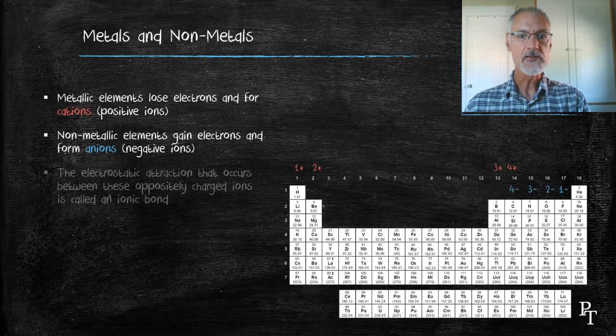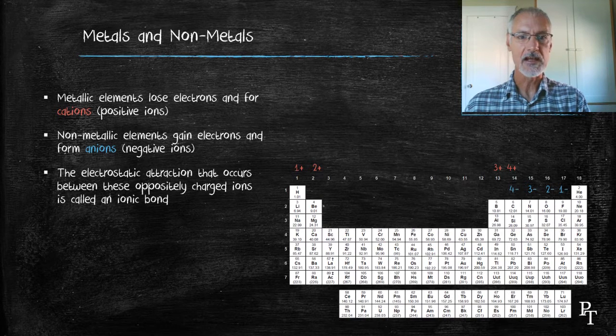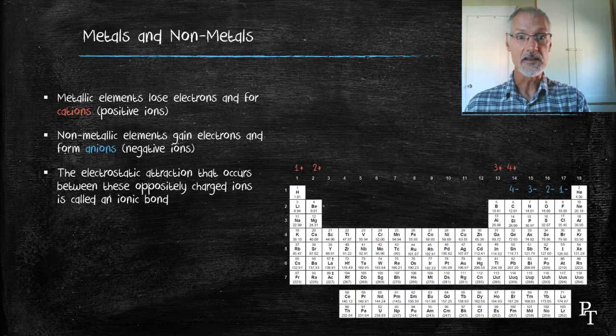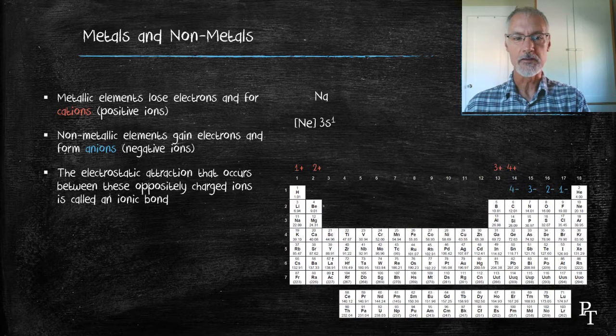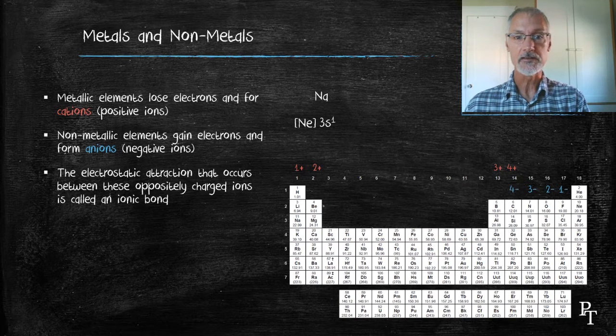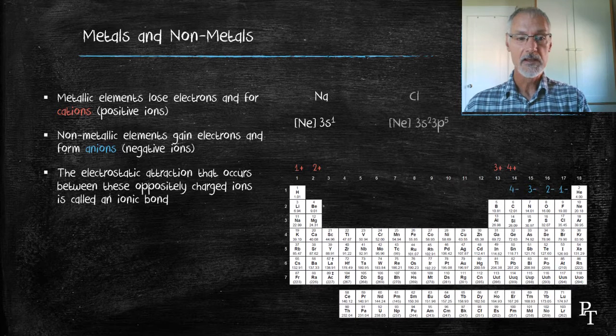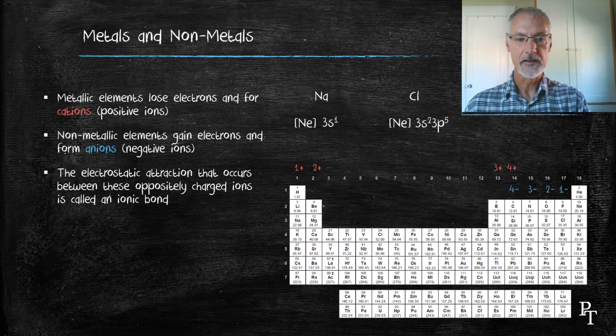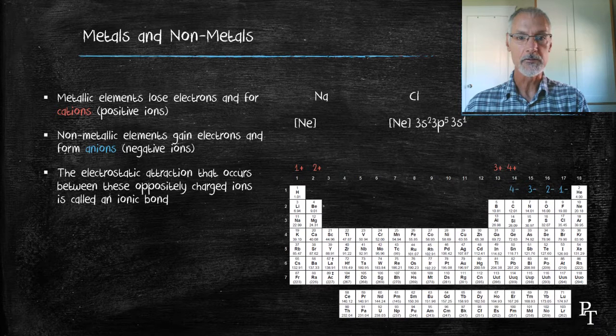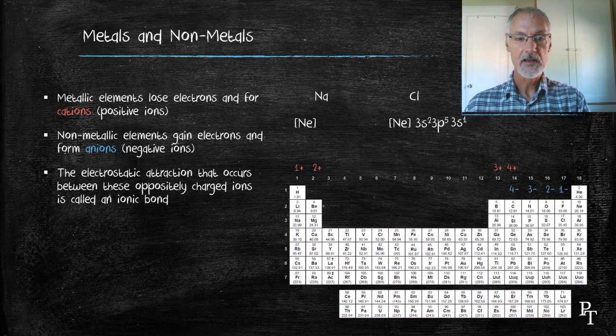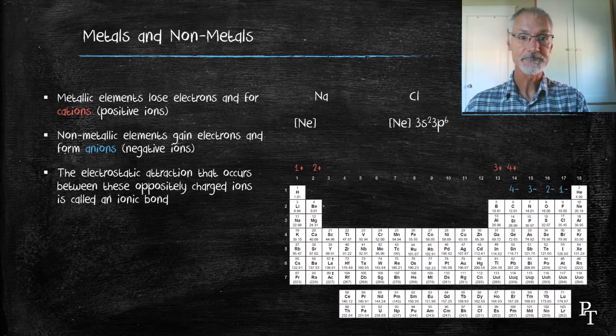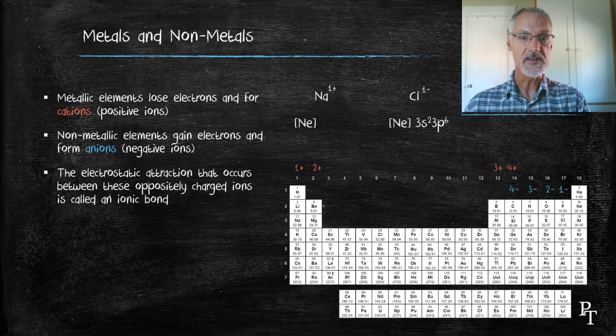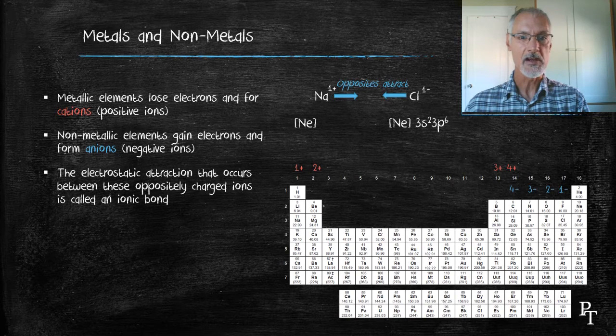An ionic bond happens when these two species get together, a metallic ion and a non-metallic ion, and the electrostatic attraction results in the ionic bond. For instance, sodium with chlorine. Here I have sodium's electron configuration and chlorine's. Sodium has a tendency to lose that 3s electron and as a result obtains the noble gas configuration of neon. Chlorine, on the other hand, gaining the electron, develops the electron configuration of argon. That then results in the formation of species that have opposite charges. These opposite charges attract and form the ionic bond.